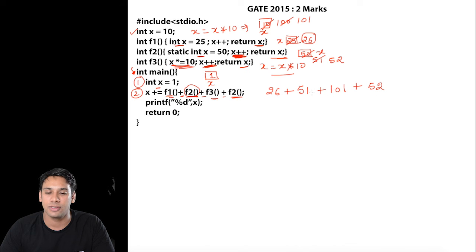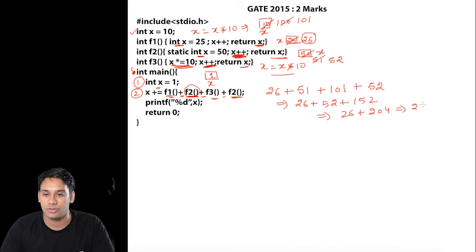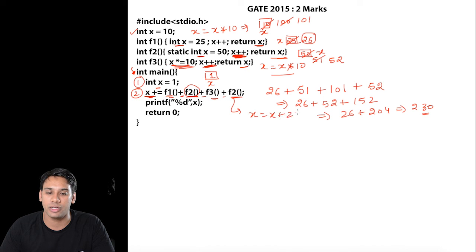Now adding all the returned values: 26 + 51 + 101 + 52 = 230. This sum of 230 is assigned back to the local x in main, which was 1, making x = 1 + 230 = 231. So the program will print the value 231.